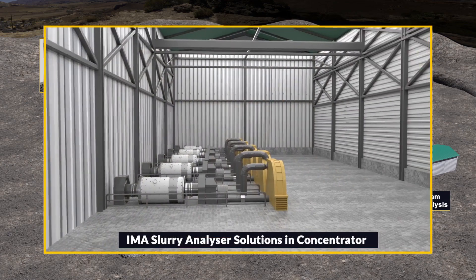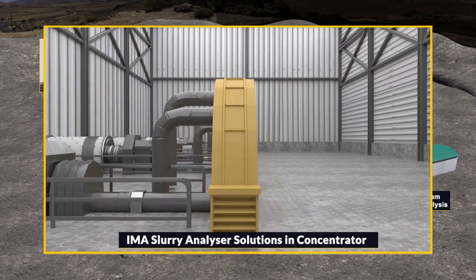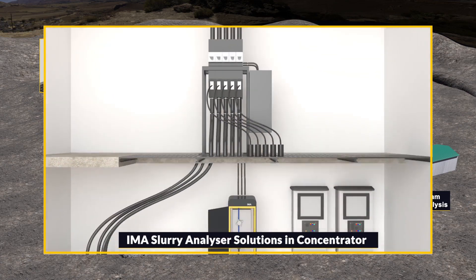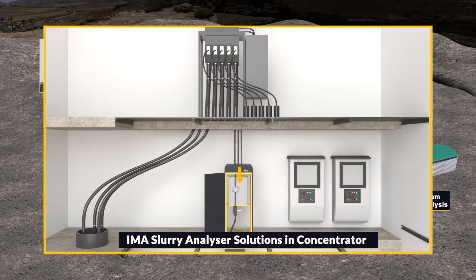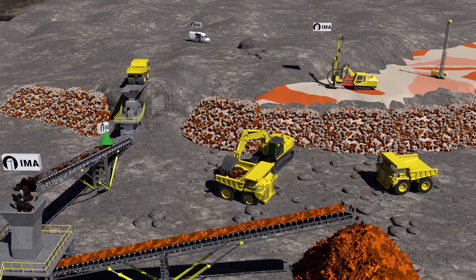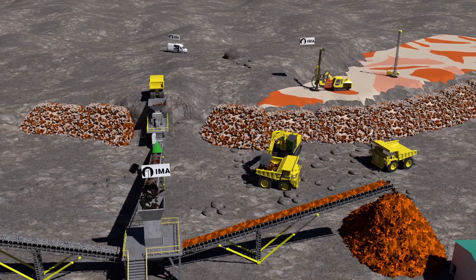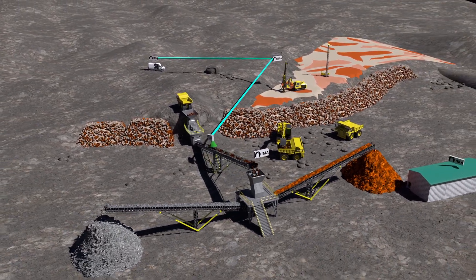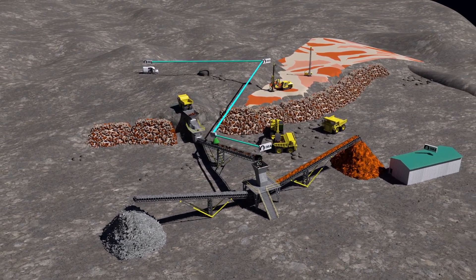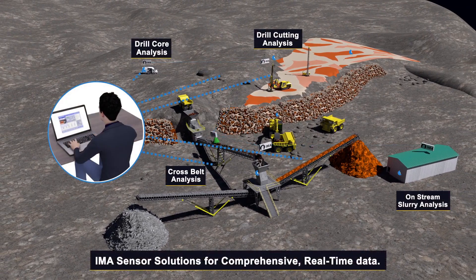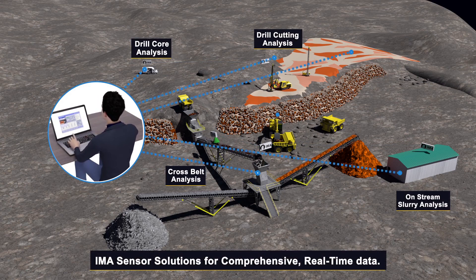Furthermore, when ore enters the concentrator, EMA sensor solutions sample and analyze the finely grinded mineral slurry for optimizing the minerals recovery process. EMA slurry solutions complete the full real-time mineral analysis cycle from mine to concentrate. For more than 25 years, EMA engineering has helped mines to improve and increase their operational efficiency. With the EMA online sensors, we are bringing real-time digital information to decision makers, enabling them to move toward more efficient and sustainable operations.